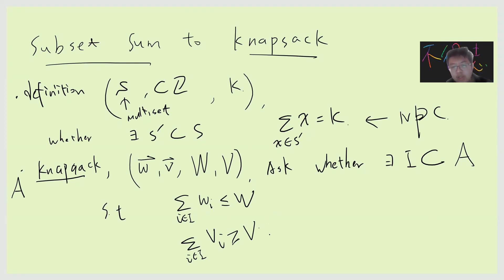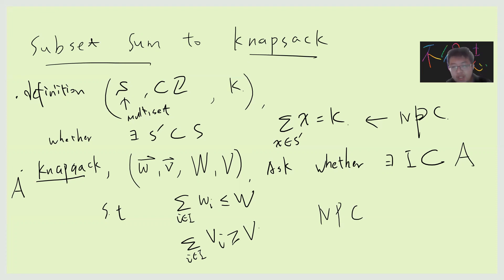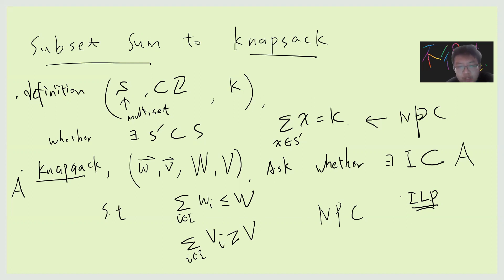The optimization version is like the usual real-world problem: you have resources, each item has a value, and you want to maximize the value. You can solve this using dynamic programming. This problem is also NP-complete. Our goal is to prove subset sum reduces to knapsack. You can see both questions involve integers with constraints, so both are actually special cases of integer linear programming.